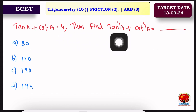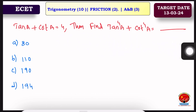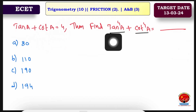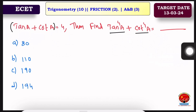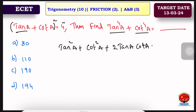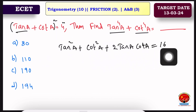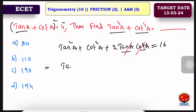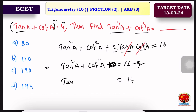Next question: tanA + cotA = 4. Find tan⁴A + cot⁴A. So we square the first equation: (tanA + cotA)² = tan²A + cot²A + 2·tanA·cotA = 16. Since tanA × cotA = 1, we have 2·1 = 2. So tan²A + cot²A = 16 − 2 = 14. Let m = 14.